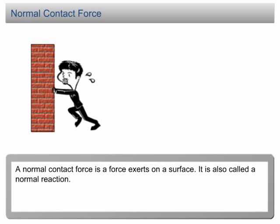A normal contact force is a force exerted on a surface. It is also called a normal reaction. For example, in the diagram, the man is pushing a wall. The force that he exerts on the surface of the wall is called the normal contact force. According to Newton's third law of motion, the wall will also exert a normal contact force on the hand of the man of the same magnitude but in the opposite direction.